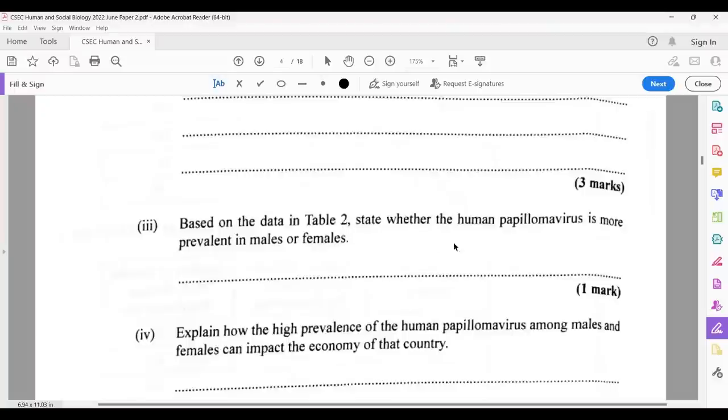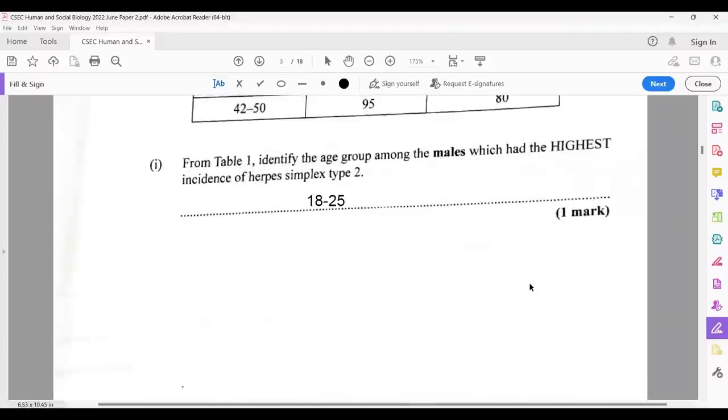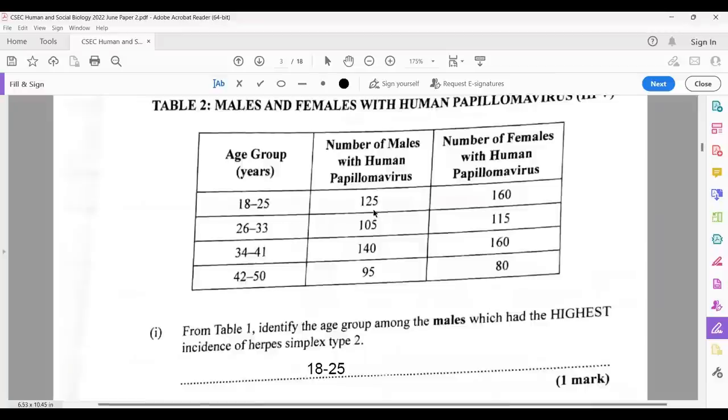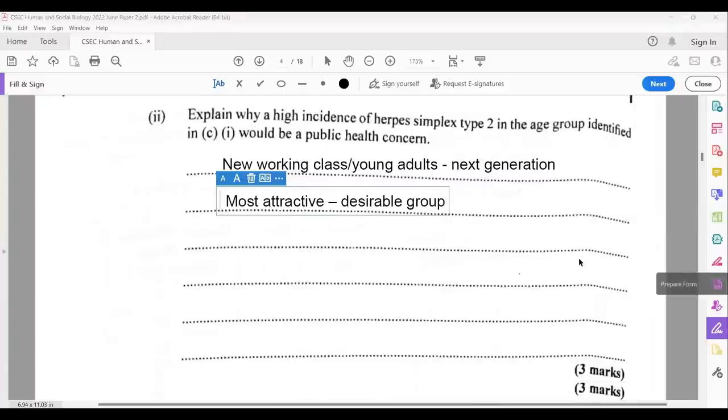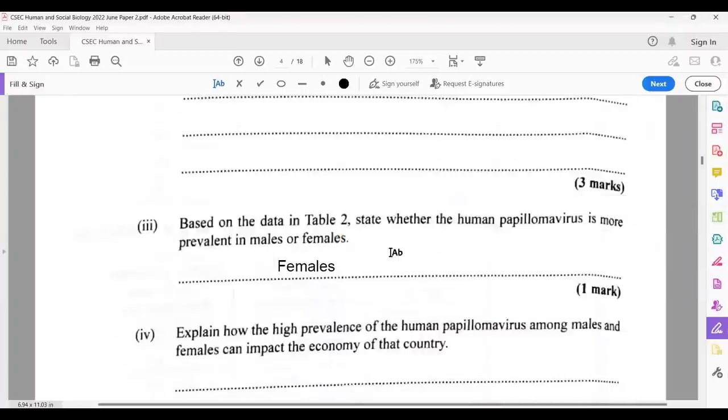Based on data in table two, state whether HPV is more prevalent in males and females. And all we have to do is make a simple addition. So when we add up the number of males, 125, 104, 140, and 95, we get about 465. When we add up the females of 160, 115, 160, and 80, we get 515. So which one has the higher group or the higher number? The females. It asks you which one. So you have two choices, either males or female. So this is literally an example of a 50 percent question for one mark.